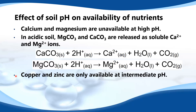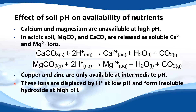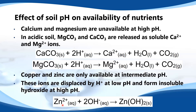Finally we look at copper and zinc. Copper and zinc are only available at intermediate pH. These ions are displaced by H⁺ ions at low pH and form insoluble hydroxides at high pH. Here we have the reaction of zinc ions with hydroxide ions to form insoluble zinc hydroxide.